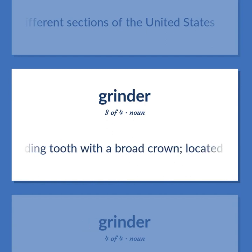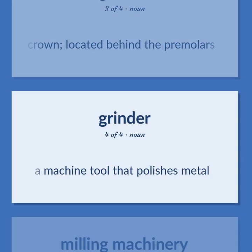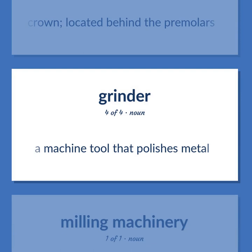Molar: a grinding tooth with a broad crown located behind the premolars. Mill: a machine tool that polishes metal.